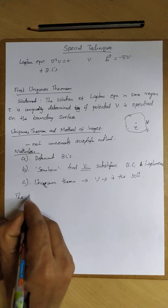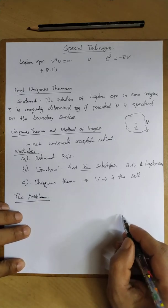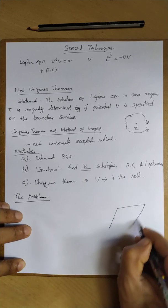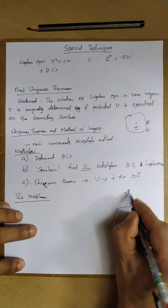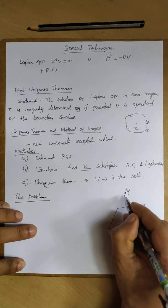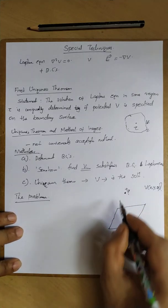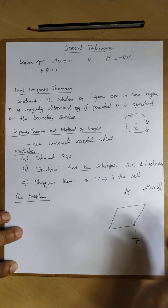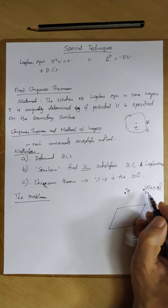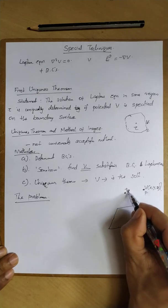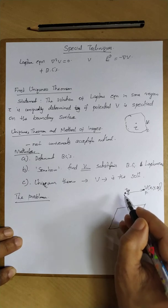What is the problem in the method of images? We have an infinitely grounded conducting plate — an infinitely long conducting plate that is grounded. We have a positive charge q placed near it. We need to find the potential V(x, y, z). The potential has two parts: one due to the plus q charge directly, and the second part due to induced charges on the plate.